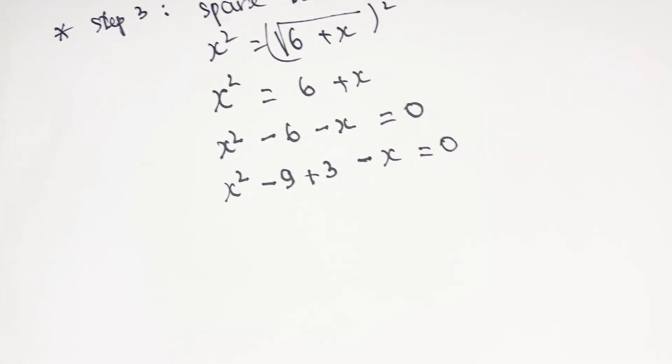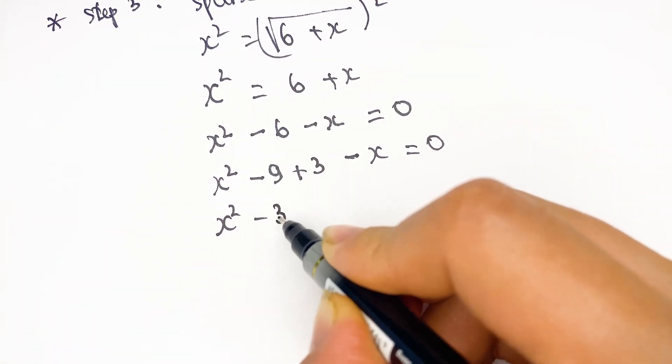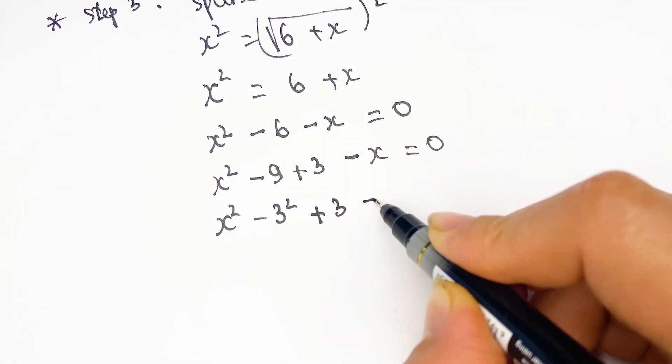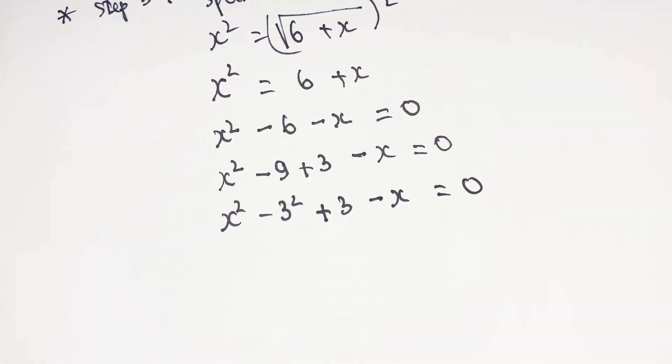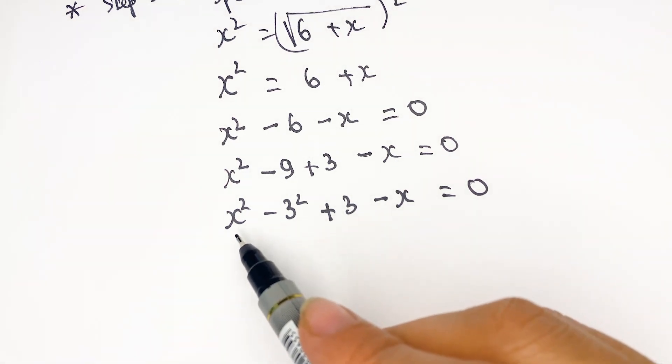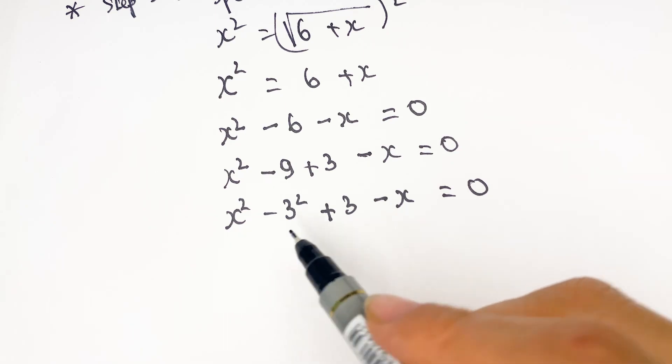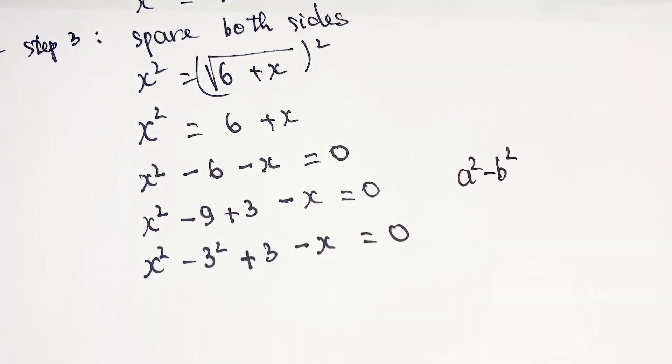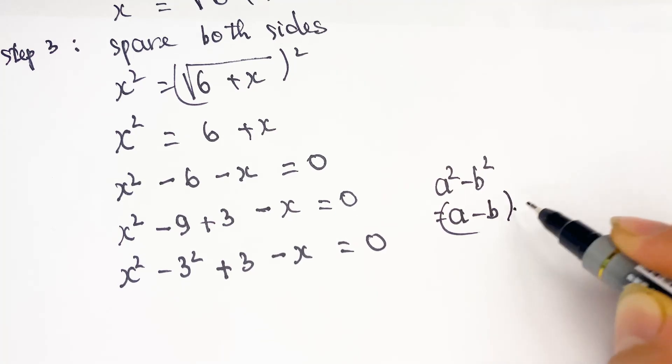Everyone, look at that. It is an identity, it's a difference of squares. A squared minus b squared equal to a minus b times a plus b.